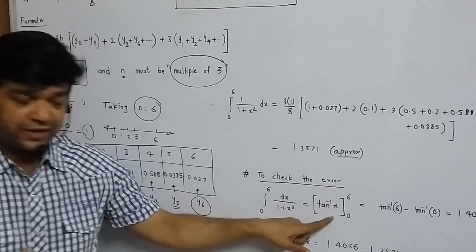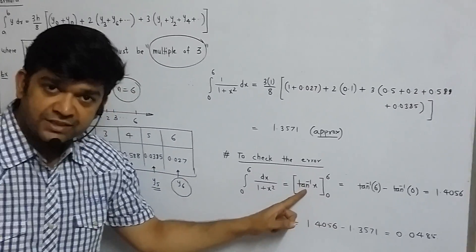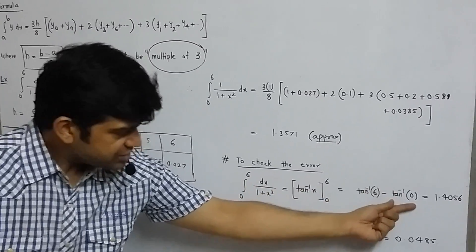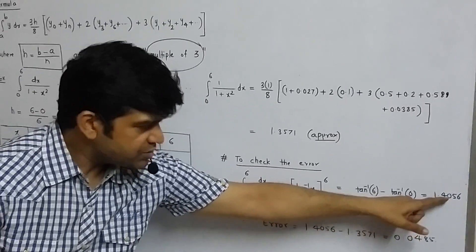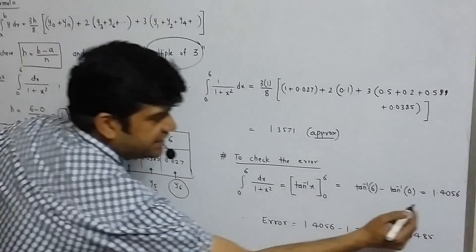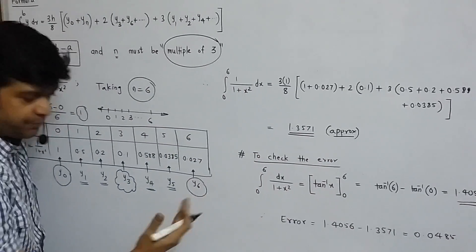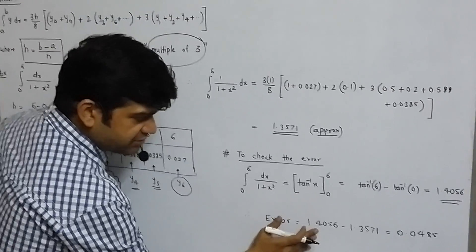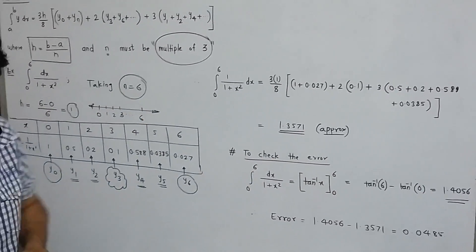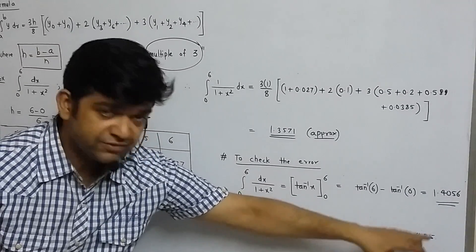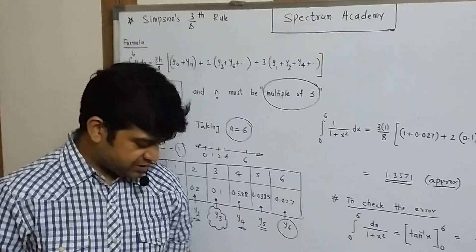We put the upper limit and we get tan inverse 6 minus we put the lower limit we get tan inverse 0. Now tan inverse 0 is 0 and tan inverse 6 is 1.4056. So this is our exact value and this is our approximate value. So error is going to be exact value minus the approximate value, so this is the error 0.0485. Now I hope this rule is clear.